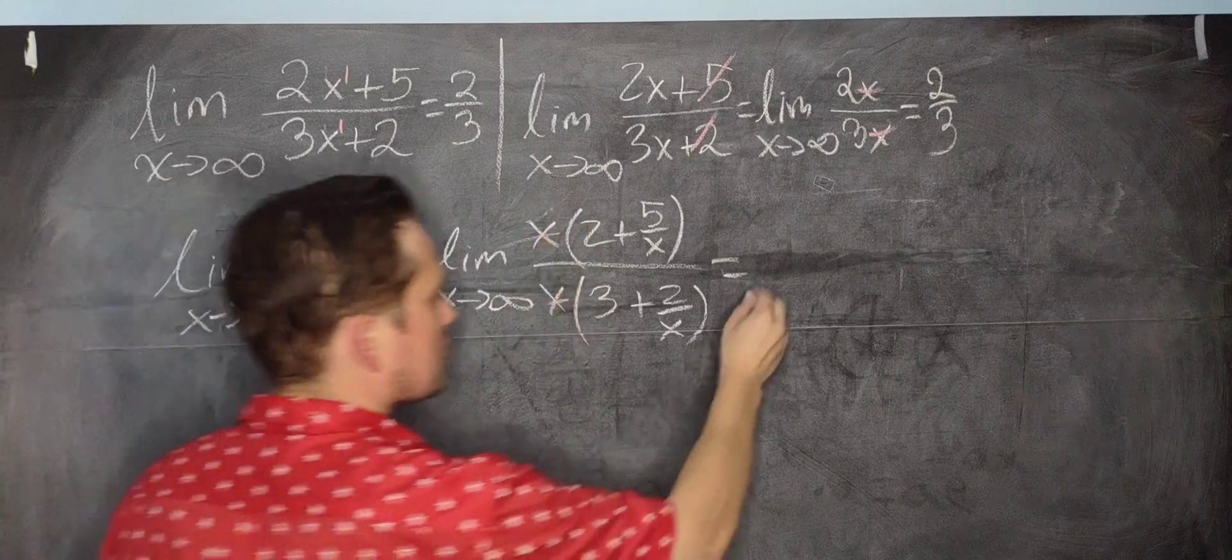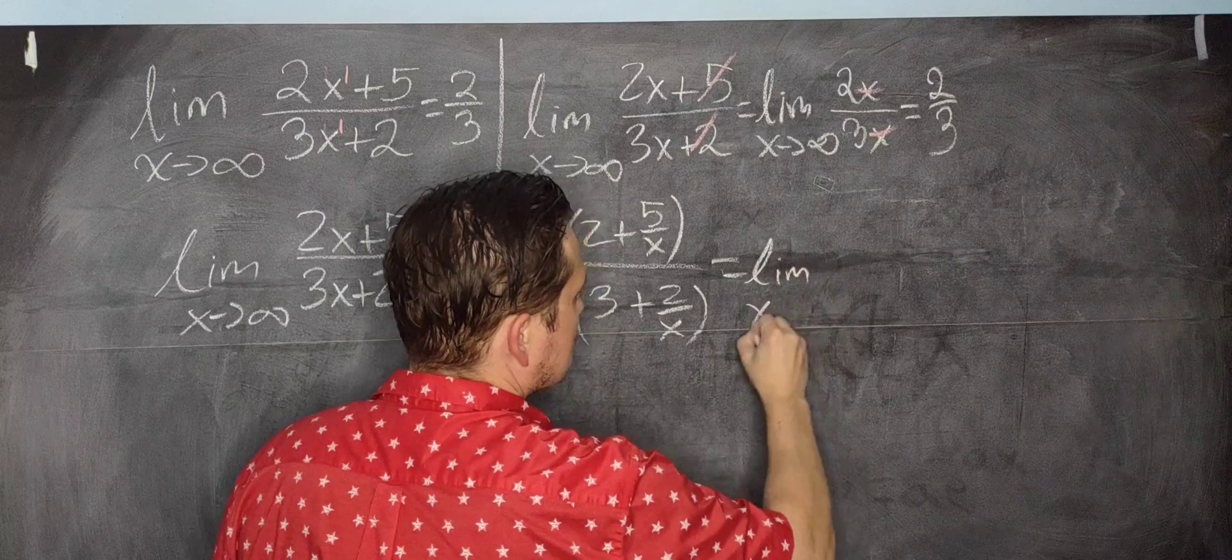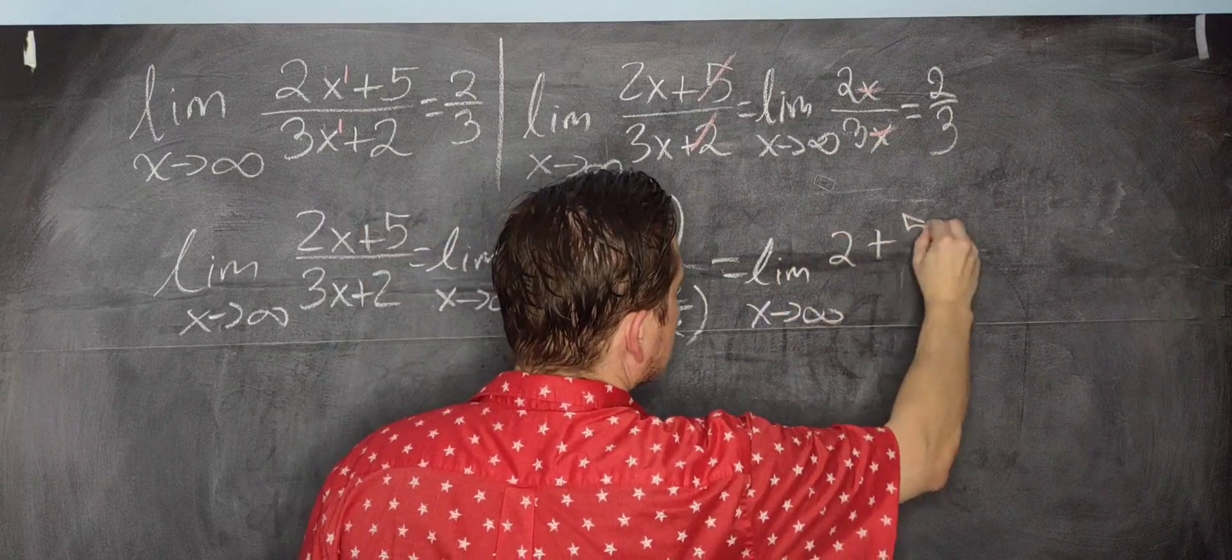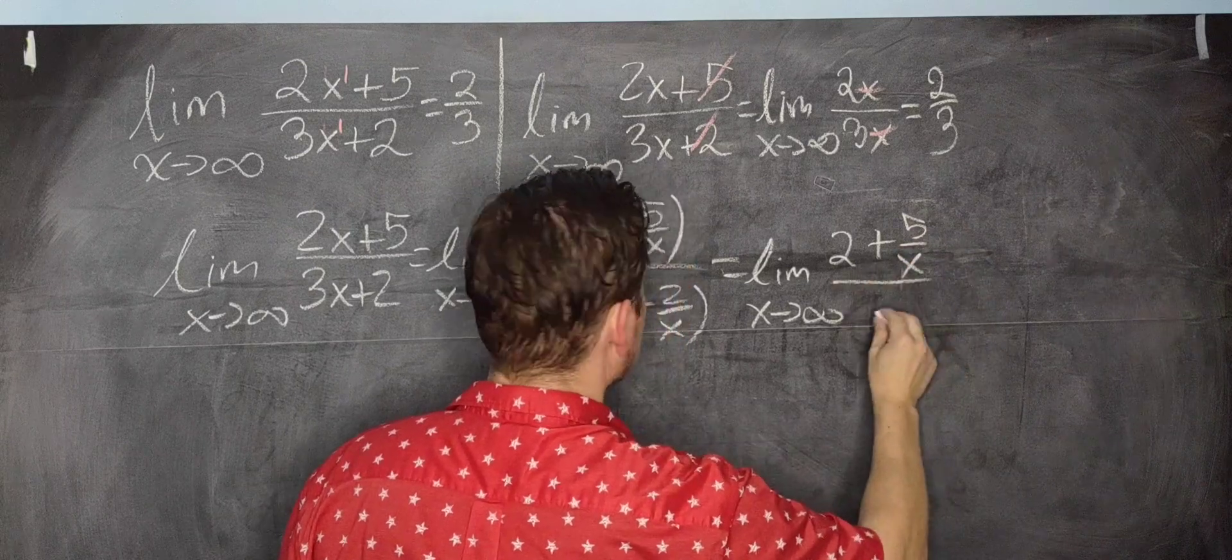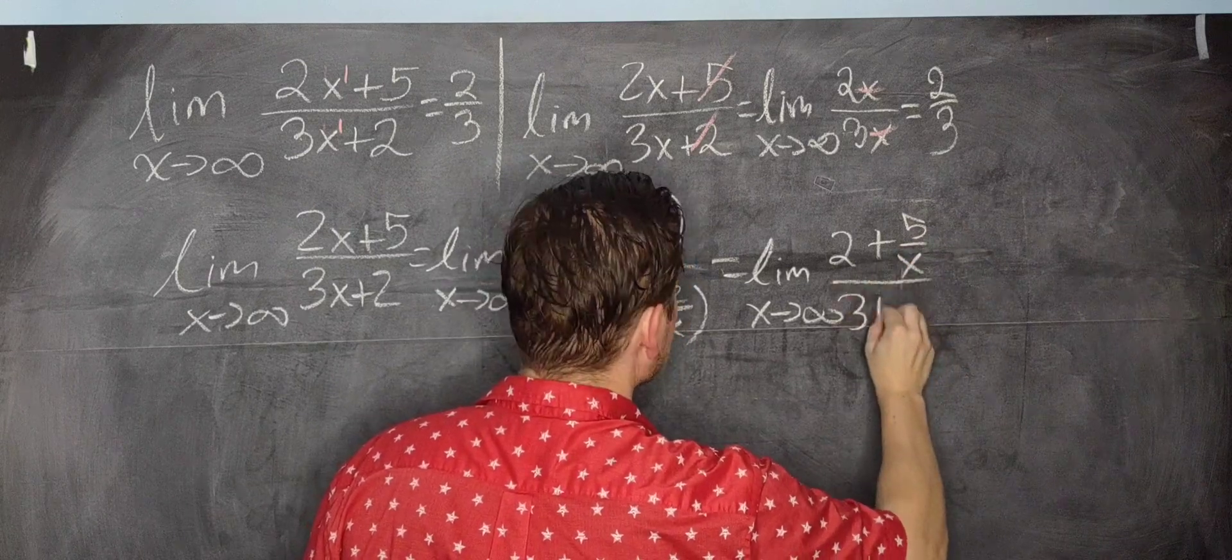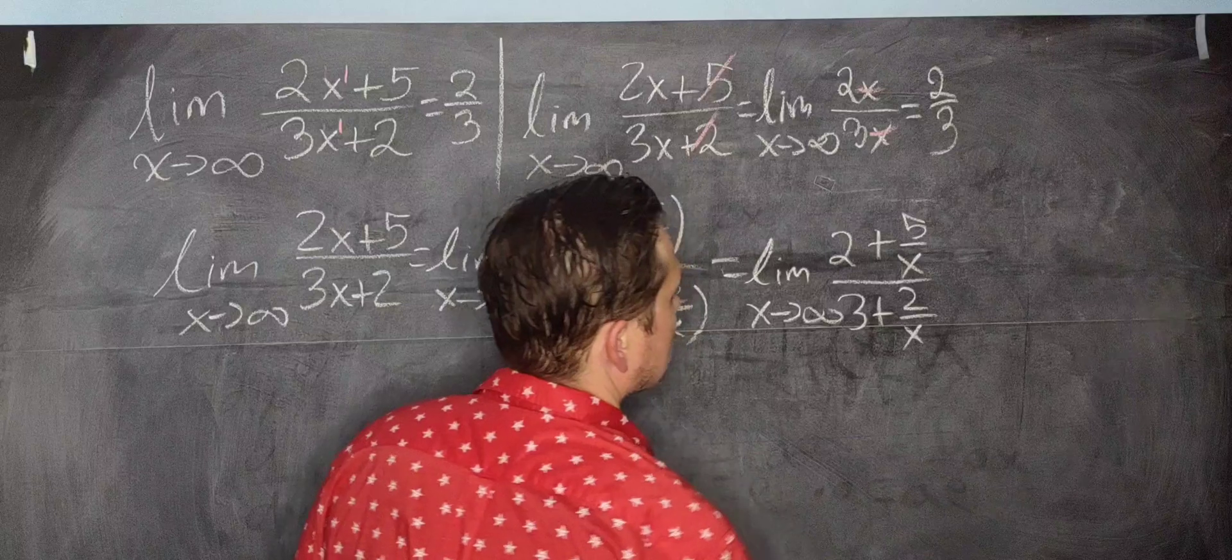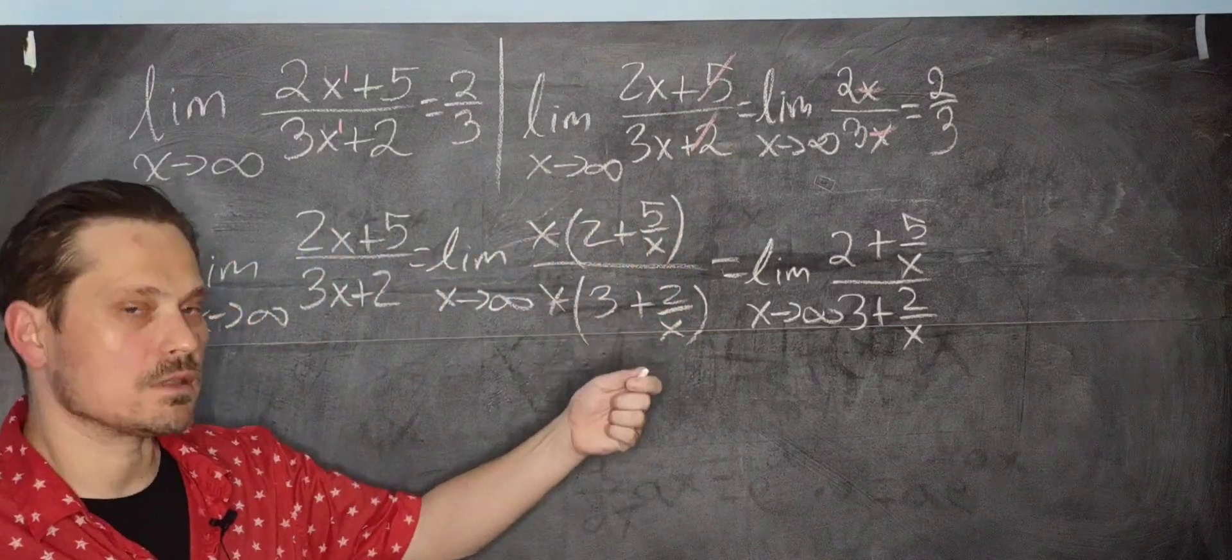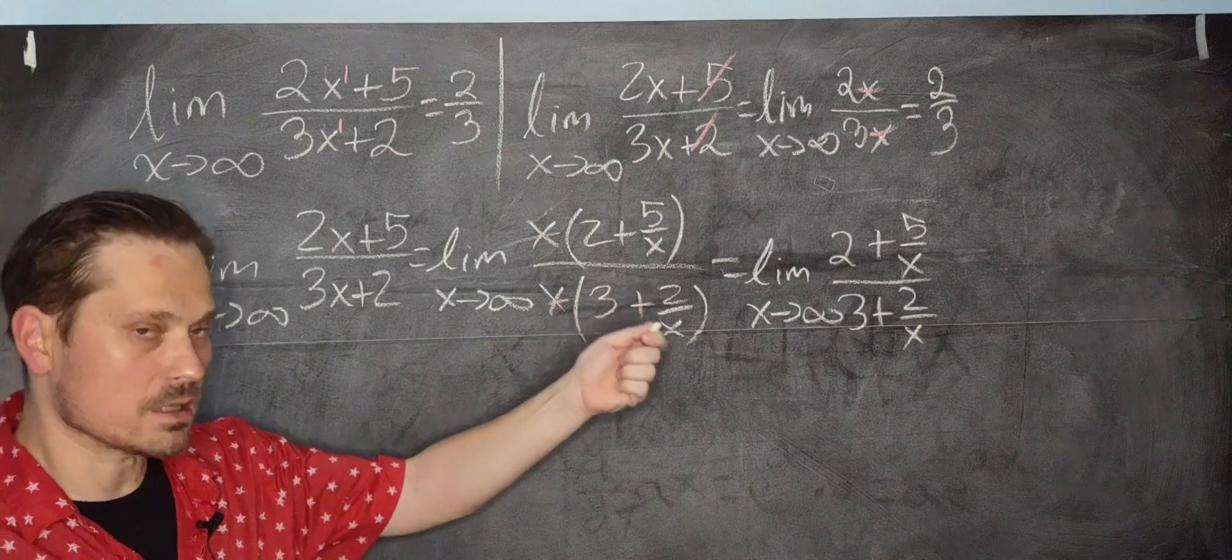as x approaches positive infinity of 2 plus 5 over x divided by 3 plus 2 over x. This is the formal way. Now what you can do is you can distribute the limit operation or operator to each part of that fraction.